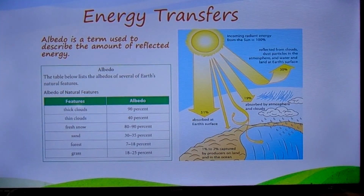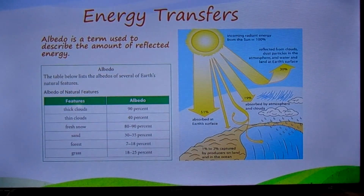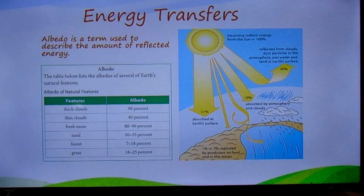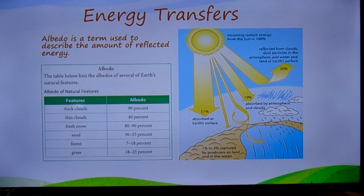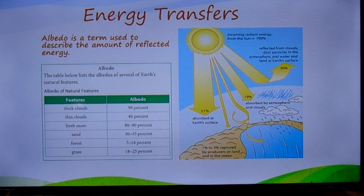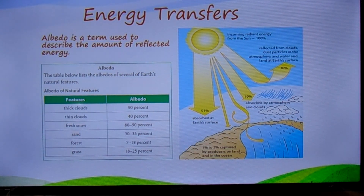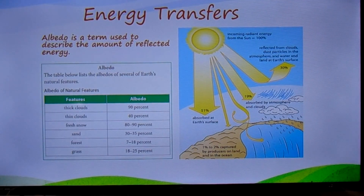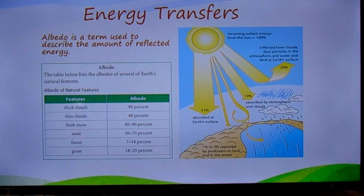Energy absorbed by the land and ocean warms the planet's surface. Some of the heat from the warm surface radiates upward into the atmosphere and out into space. Of the energy that reaches the ground, only a small fraction reaches producers. Of that amount, only a portion is used for photosynthesis. The result is that only one to two percent of the total radiant energy that reaches Earth is converted into chemical energy through photosynthesis.